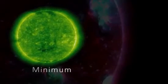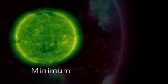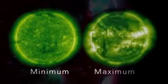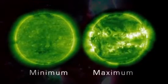During one cycle, the number of sunspots, a good indicator of solar activity, goes from low to high and back down to low. Solar minimum represents a period of time when sunspot numbers are relatively low, and solar maximum represents a period when sunspot numbers are relatively high.